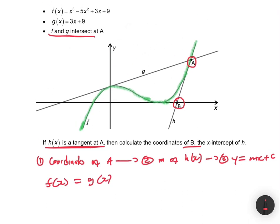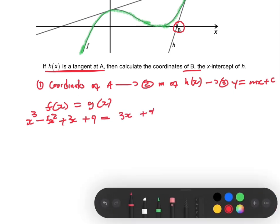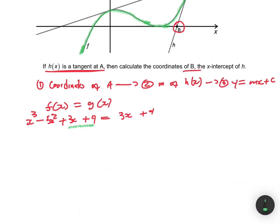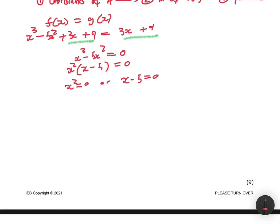Setting f(x) = g(x): x³ - 5x² + 3x + 9 = 3x + 9. The 3x + 9 cancels from both sides, leaving x³ - 5x² = 0. Taking x² as a common factor gives x²(x - 5) = 0, so x² = 0 or x - 5 = 0.